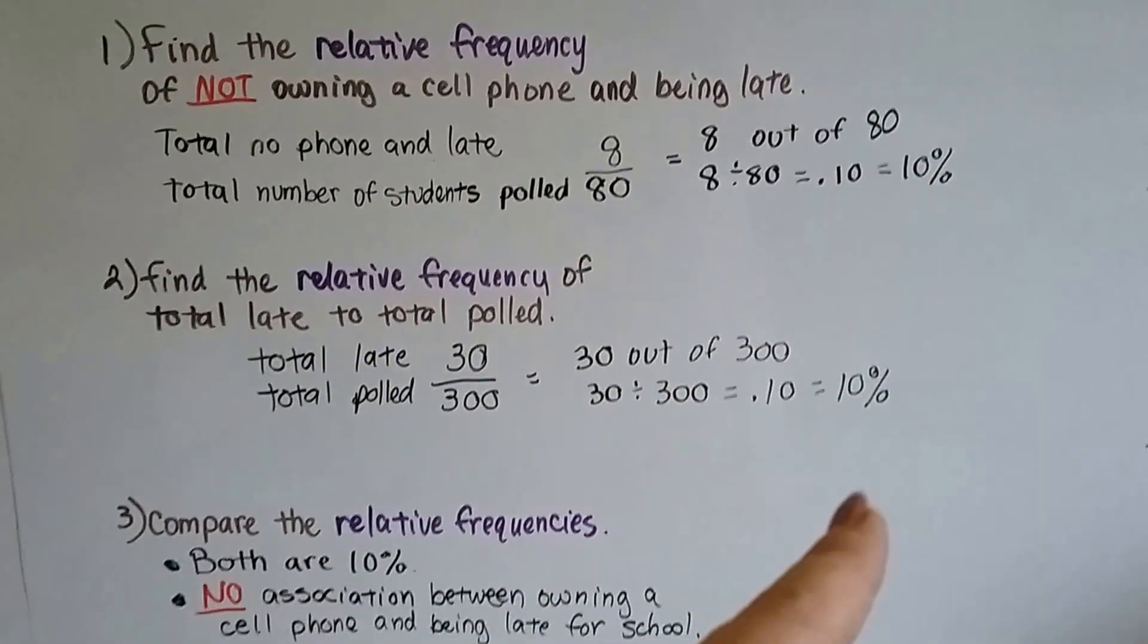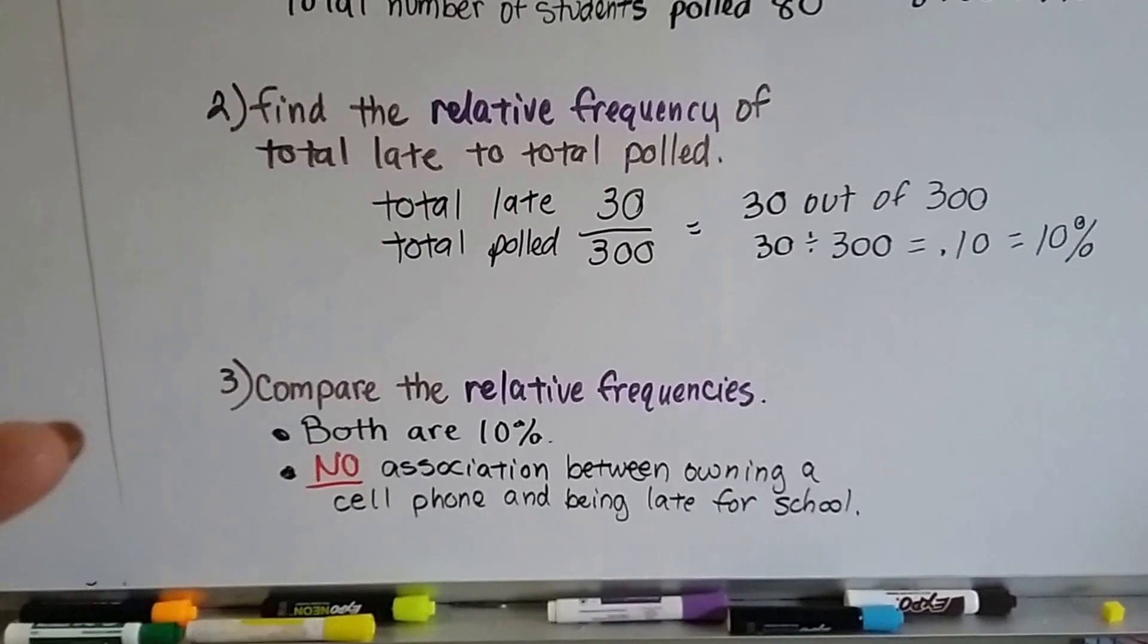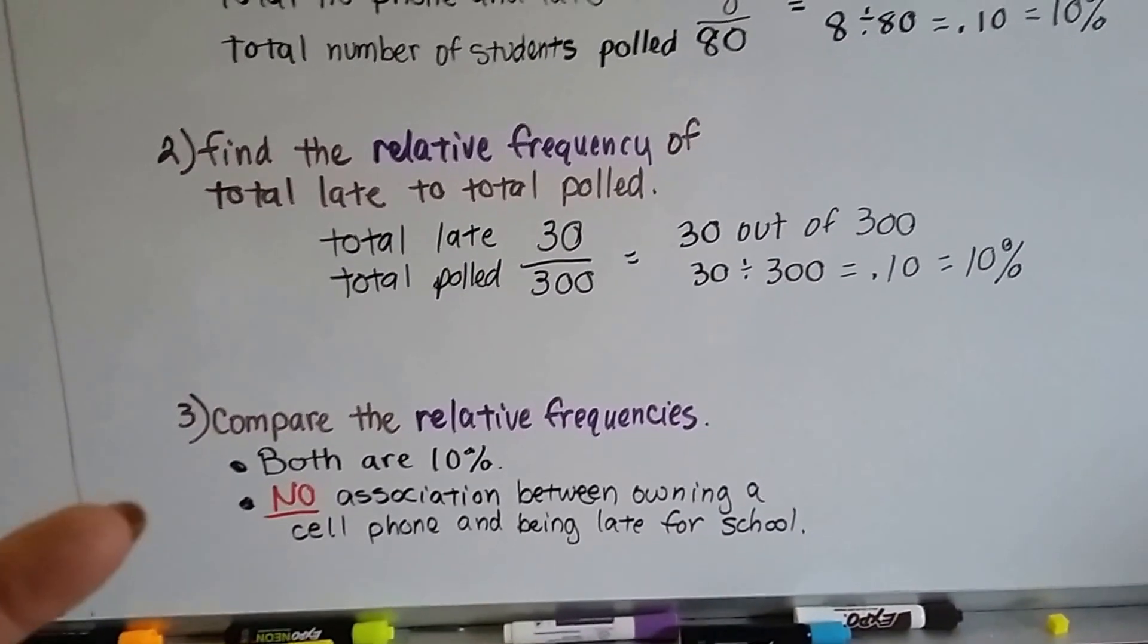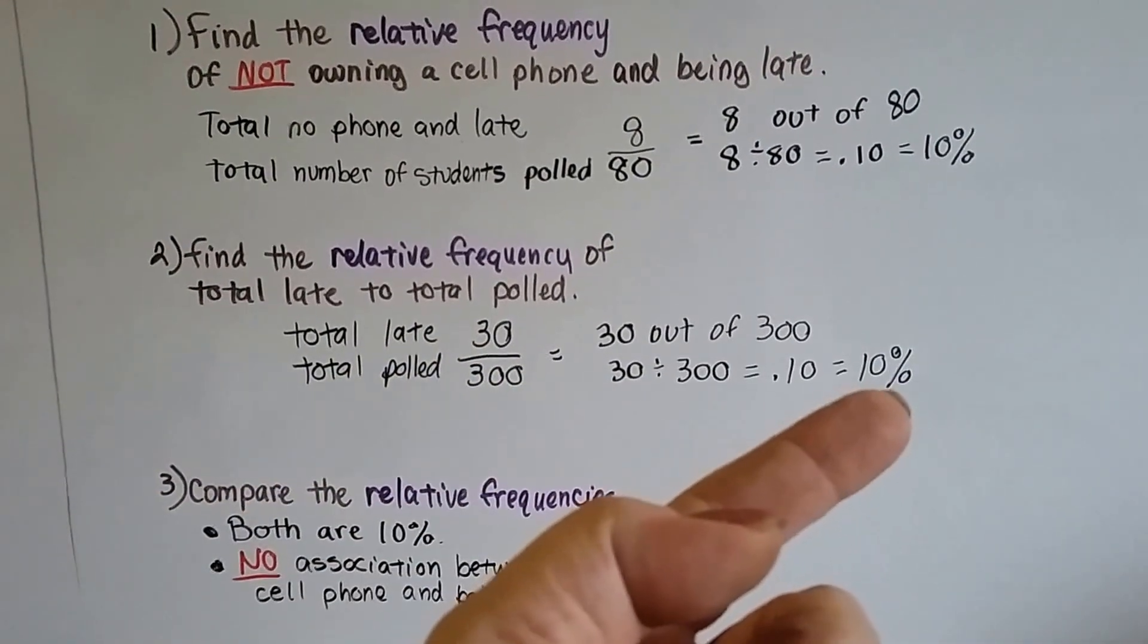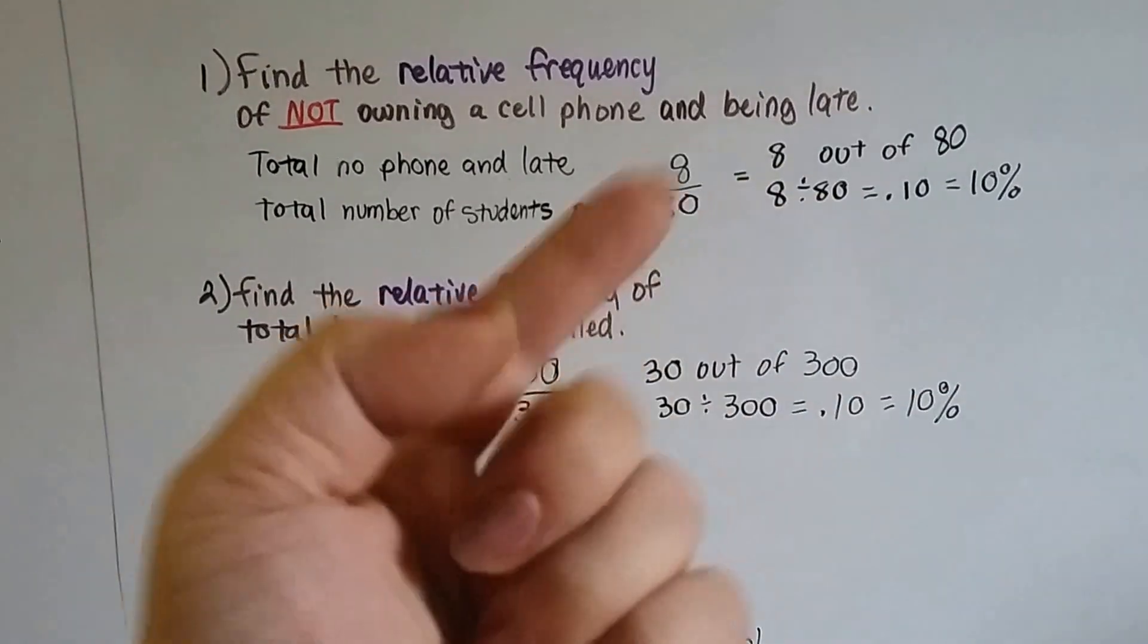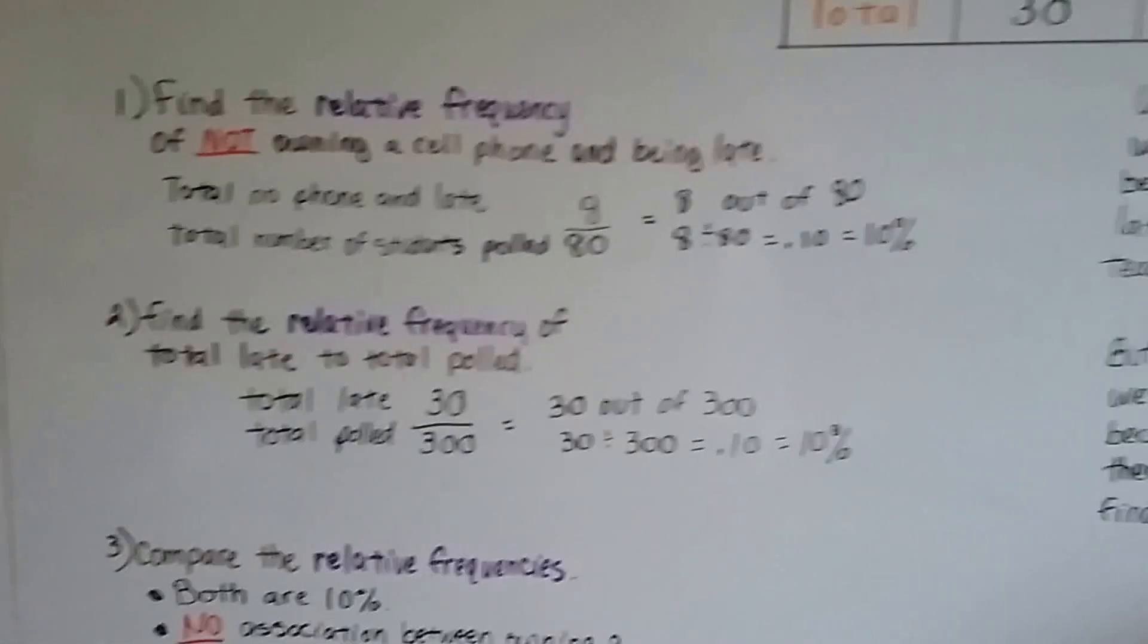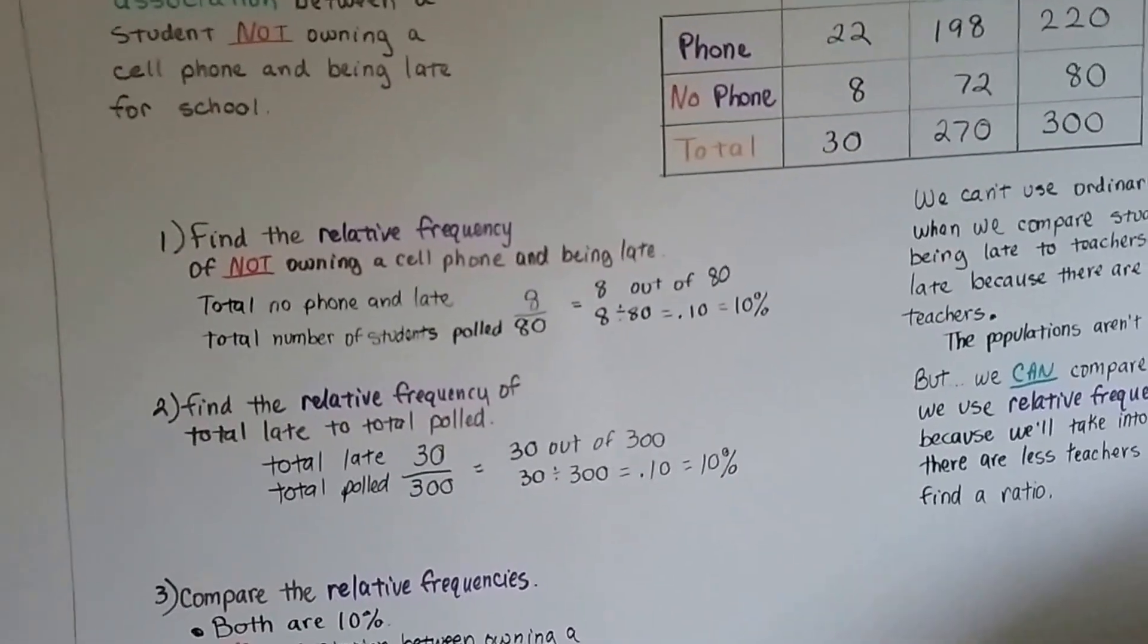Look, both of the relative frequencies were 10%. Now, we compare them to see if there's an association. Well, both are 10%. So, there's no association between owning a cell phone and being late for school. Whether you own one or not, 10% of the students were late. And the ones that didn't own one, 10% of the students were late. So, it didn't matter if the kids had a cell phone or not because 10% of the students were late.